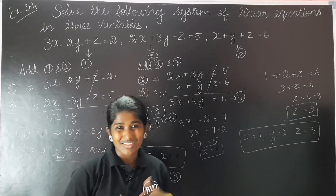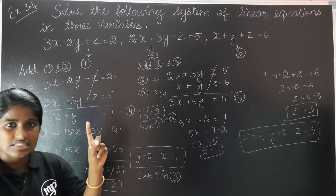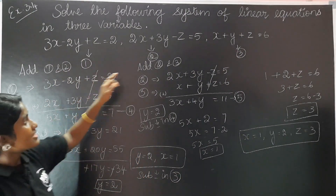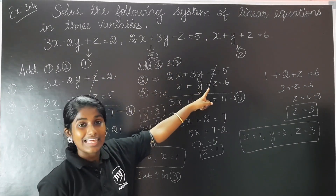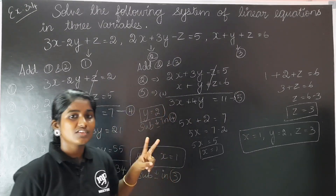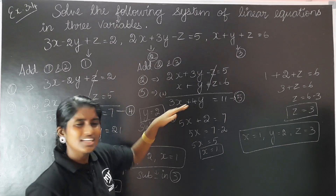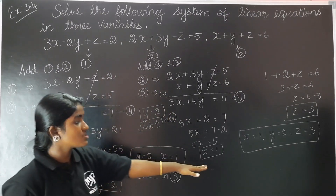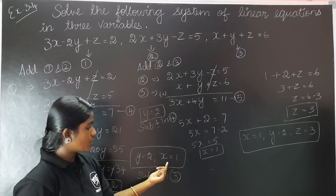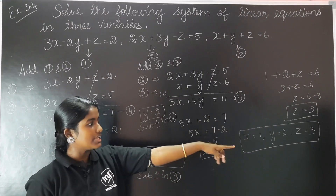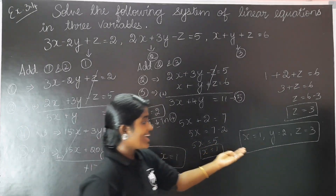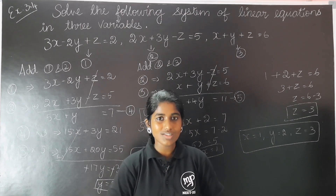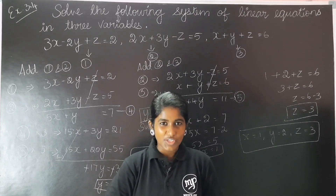It is very easy. First, eliminate one variable from equations 1 and 2, and equations 2 and 3, to get two equations in two variables. Solve those to find x and y values. Then substitute x and y into the third equation to find z. It is very simple. I hope you all understood. If you have any doubts, please comment in the comment box so that I can improve myself.